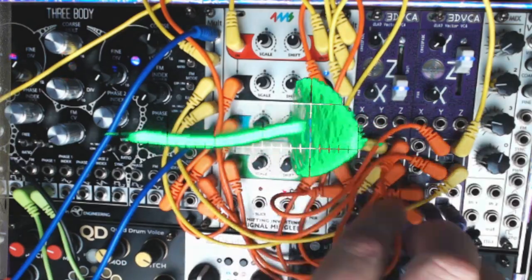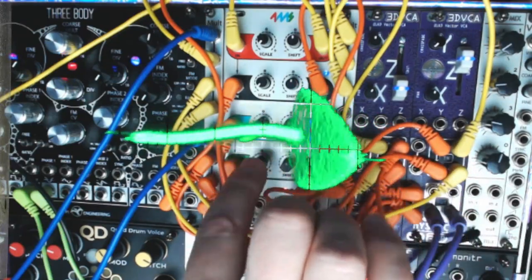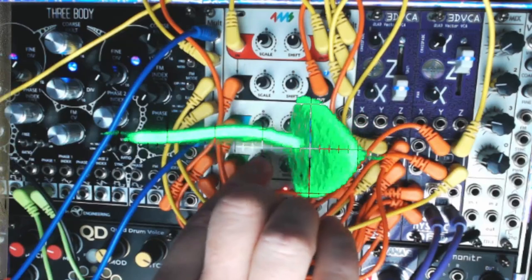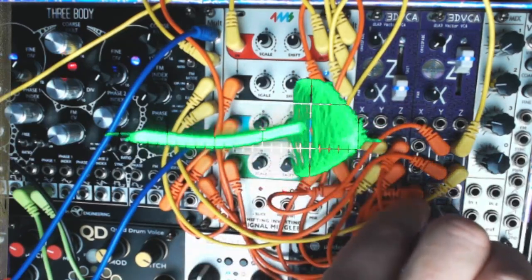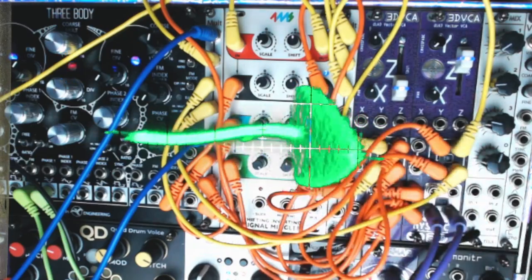I have the southwest and southeast outputs of our first 3DVCA going into the last two channels on our 4MS SISM, and then the outputs of the SISM are going into the sum inputs on our second 3DVCA, the southwest and southeast sum inputs.